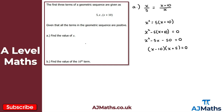Factorising gives two solutions: x = 10 and x = −5. However, we're told all terms in the geometric sequence are positive, so x = −5 would make the second term negative, contradicting that condition. Therefore we reject x = −5, and x must equal 10.